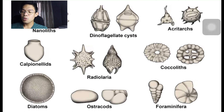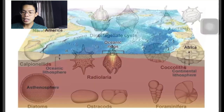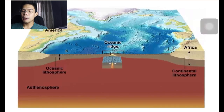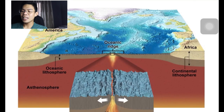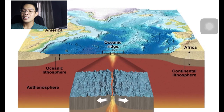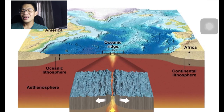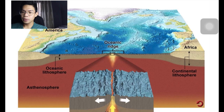Some common types of microfossils are foraminifera, diatoms, and radiolaria. The deep sea drilling program and earlier investigations showed that the oceanic crust is geologically youthful, and as it moves from the mid-Atlantic ridge outward, this youthfulness is maintained by the mechanism of seafloor spreading.